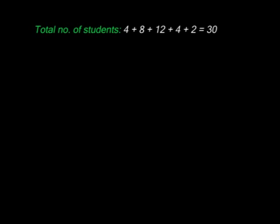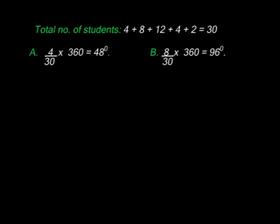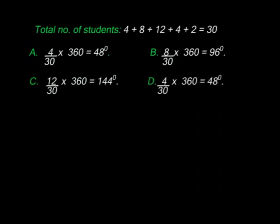Now we find how many degrees each proportion shall represent. Starting with grade A, I had 4 students: 4 over 30 times 360 degrees gives 48 degrees. For B, 8 students out of 30 times 360 gives 96 degrees. C was 12 over 30 times 360, giving 144 degrees. D: 4 students out of 30 times 360 gives 48 degrees. E: 2 students out of 30 times 360 gives 24 degrees. If you add these angles — 48 plus 96 plus 144 plus 48 plus 24 — they give exactly 360 degrees. It is always safe to verify this first.